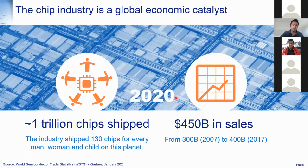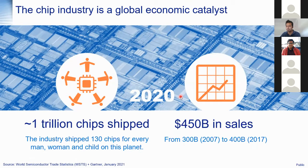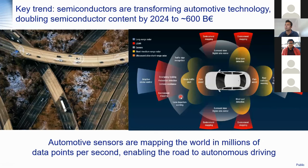If you look into the chip industry, in just 2020 alone, we shipped 1 trillion chips — basically 130 chips for every human being. Sales reached 450 billion US dollars, up from 300 billion in 2007 and 400 billion in 2017. It is a booming industry. The question is: why do we need so many chips and what are we doing with them?